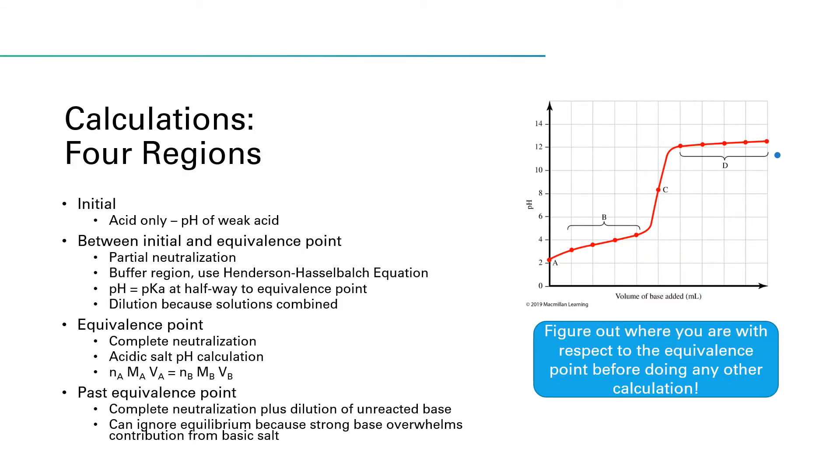Just like with our strong acid, strong base curve, we can think of the titration curve as being separated into four distinct regions. At the very beginning, when you have just acid in your Erlenmeyer flask, no base has been added yet. This becomes a calculation of the pH of a weak acid. So you have to set up your ice chart. X will be equal to the square root of Ka times your initial acid concentration. And then from X, you can find pH.